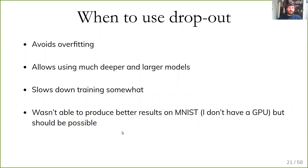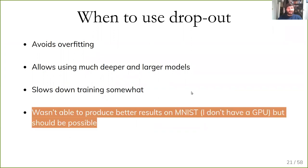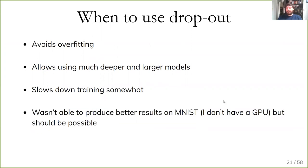Dropout also allows you to learn larger and deeper networks without overfitting as much, but it slows down training because you add so much noise to the training process. In the notebooks I couldn't get it to run better on MNIST, but in theory you can get better results using dropout than using a vanilla neural network. When this was published it was a new state of the art for MNIST. Dropout helps to avoid overfitting and helps when networks are much larger than what you'd expect given your training set size.